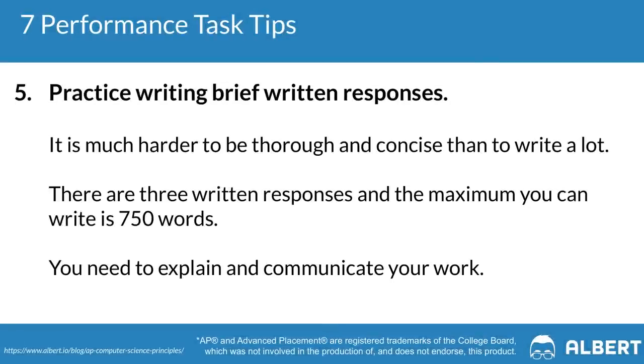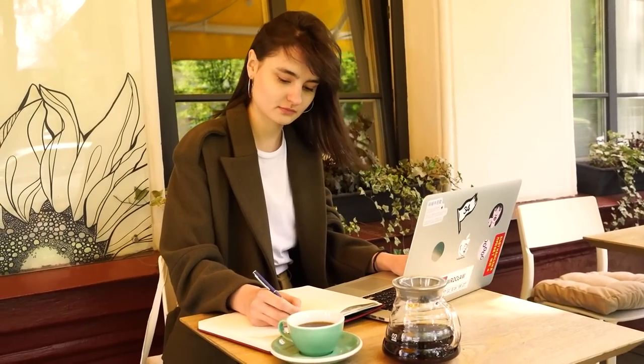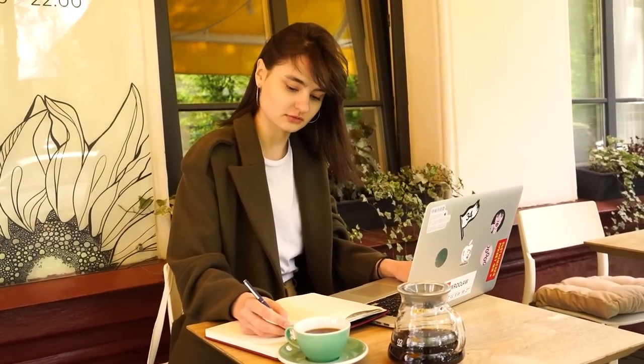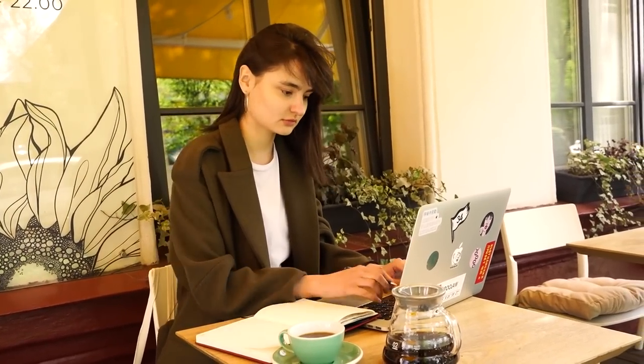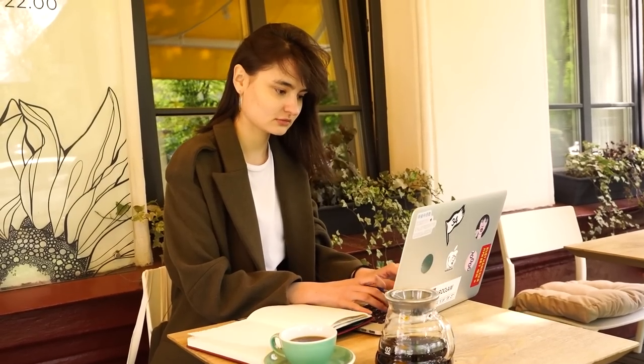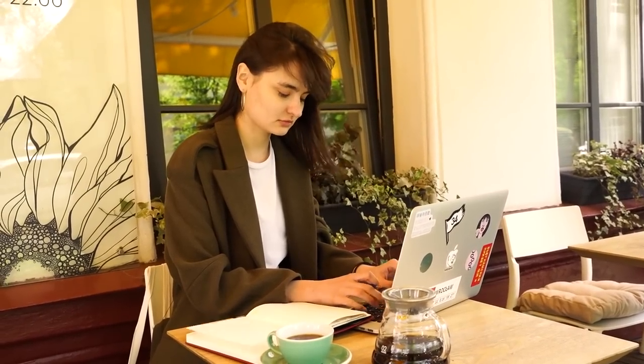Our fifth tip is to practice writing succinct written responses. You'll be faced with three written responses with a maximum of 750 words total. Assume your reader is educated in computer science, so you don't need to explain every single thing — what's important is that you explain and communicate your work, show how your program accomplishes the task, and demonstrate that you understand what your program is doing.